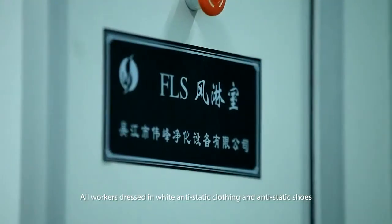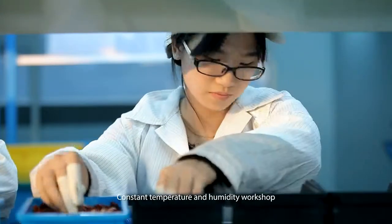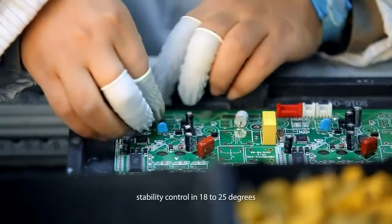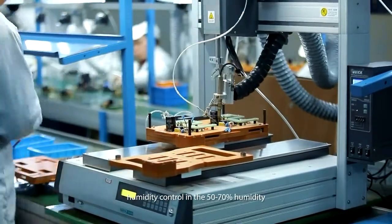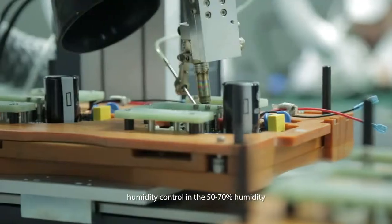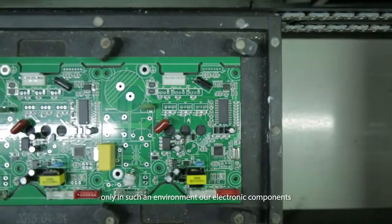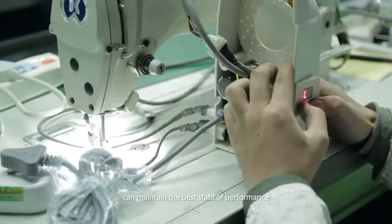All workers dressed in white anti-static clothing. Custom temperature and humidity workshop with temperature controlled at 18 to 25 degrees and humidity controlled at 50 to 70 percent. Only in such an environment can our electronic components maintain the best state of performance.